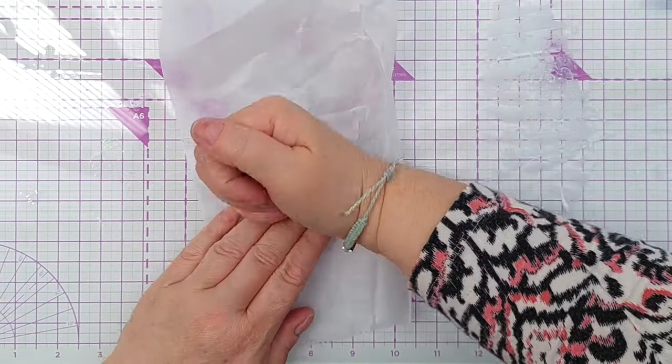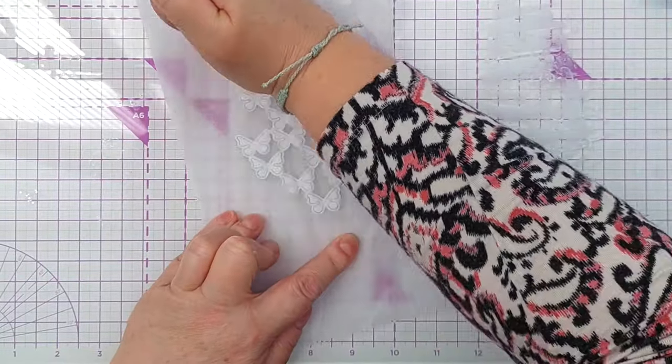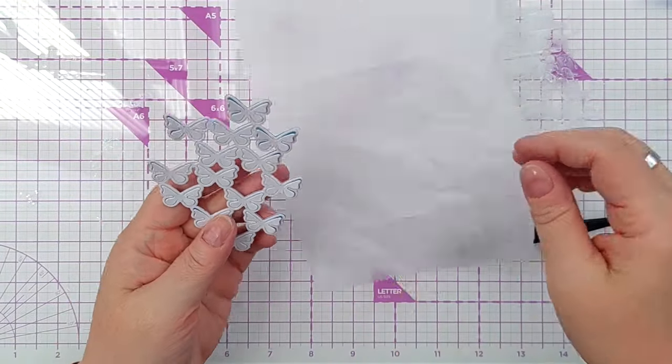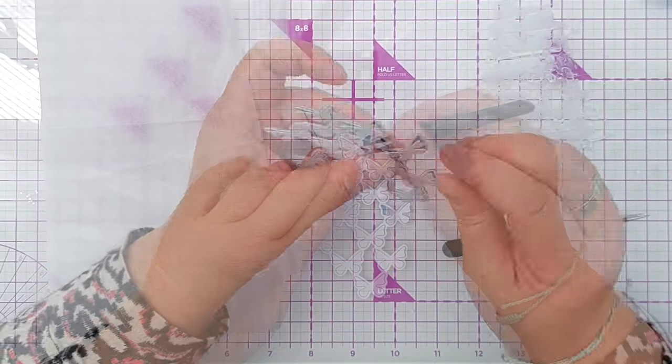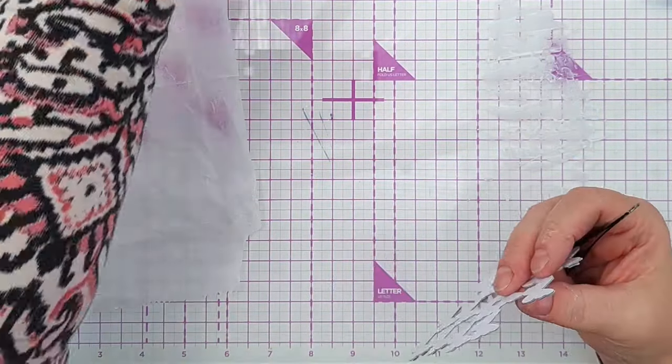I can give that a good press down protecting it with deli paper because the butterfly wings shouldn't have any glue on them, they should just lift right back up again. But I'm not going to do that until I've added this to my card front.